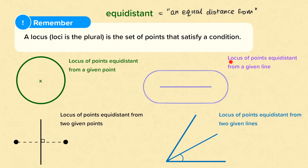If I'm looking for the locus of points that are equidistant from a given line — an equal distance from this line here — let's use the same distance. Let's say that this is one centimetre away. So all of these points along here are one centimetre away from the line, and that's the same with any of these points below the line.